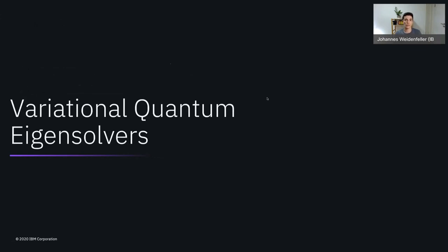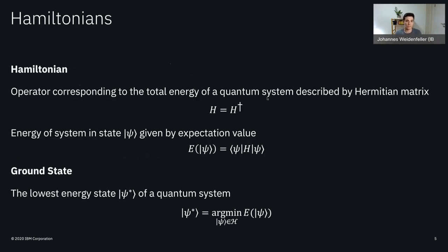Let's start with the first topic: variational quantum eigensolvers. Before we can understand what the VQE does in detail, we need a few definitions. A Hamiltonian is an operator corresponding to the total energy of a given quantum system, described by a Hermitian matrix H — Hermitian means it equals its conjugate transpose. A quantum system is described by a vector in a complex Hilbert space, denoted in the ket notation. The energy of a system in state Psi is given by the expectation value of that vector Psi with respect to matrix H.